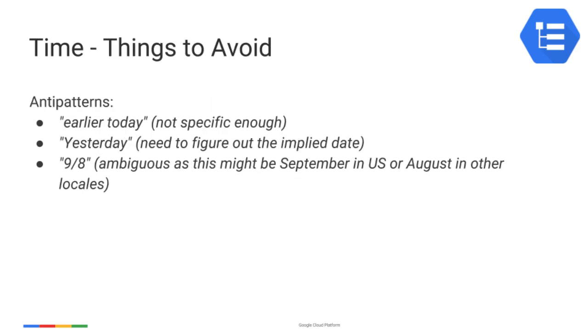When time is specified in a relative way, including omission of a time zone, the reader must convert it into an absolute format that can be input into time series monitoring tools. This is error-prone and costly, especially considering that each reader must pay the price.